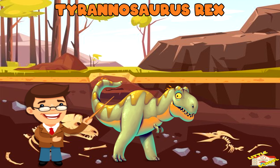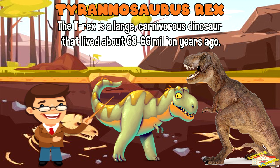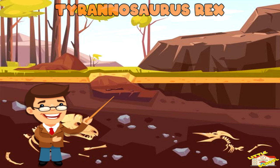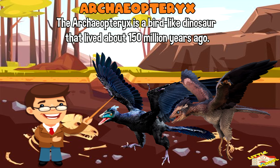Tyrannosaurus rex — the T-rex is a large carnivorous dinosaur that lived about 68 to 66 million years ago. Tyrannosaurus rex fossils have been found all over the world and they are some of the most famous and well-studied dinosaur fossils.